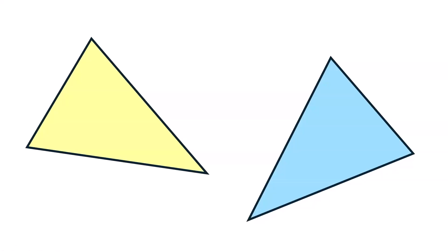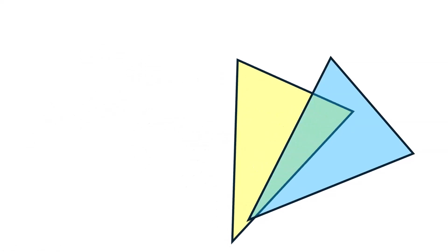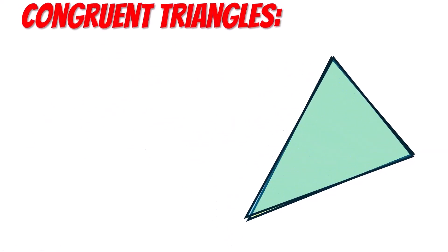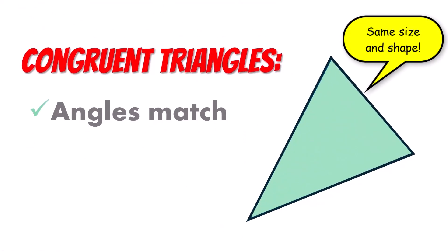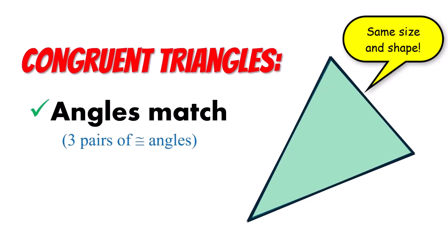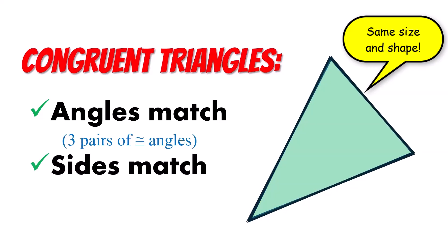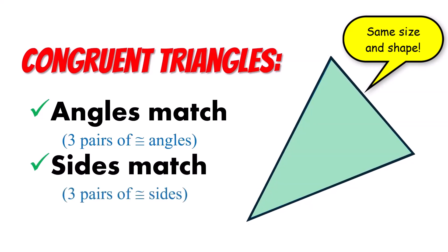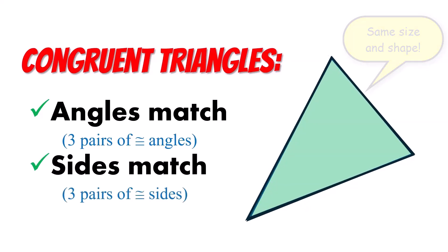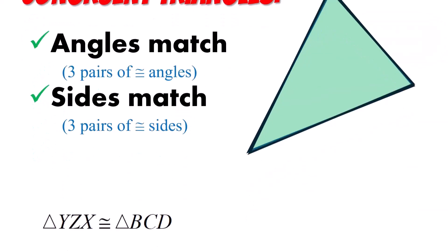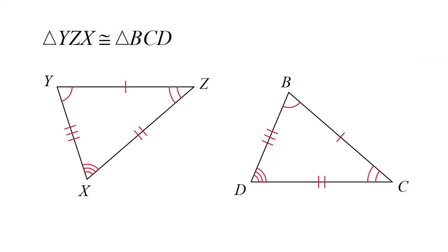We're starting a new unit about congruent triangles. These two triangles are congruent because their angles match, which means they have three pairs of congruent angles, and their sides match, which is three pairs of congruent sides.